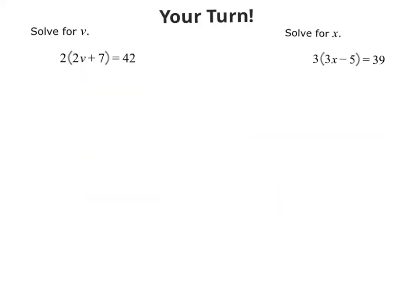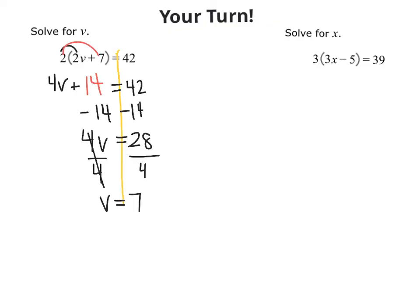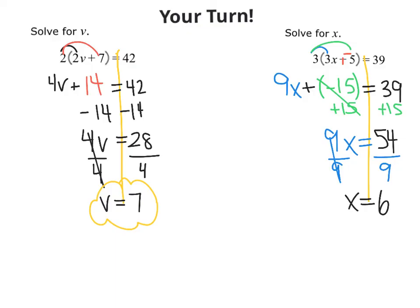Now, it's your turn to try a couple. I'd like you to pause the video, work them out on paper, and then come back to see how you did. Ready to go? Let's check our first one. For the first one, we get an answer of v equals 7. If you did not get that, go back through your work and check it with mine and see if you can spot where you went wrong. If you did get it correct, let's check your next one. And then our last one, we get an answer of x equals 6.